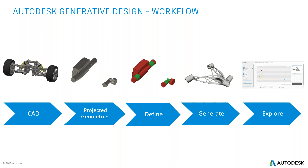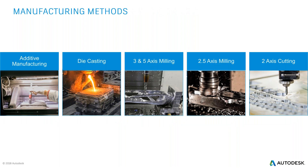Then you let the program generate all the different outcomes, and critically, you explore those outcomes — comparing cost, mass, and displacement as Mike showed in the explore graph. Regarding manufacturing methods, there are many available: unrestricted, additive, die casting, three-axis and five-axis, two-and-a-half axis, and two-axis. Many of these have only recently been added and are continually evolving, with the goal that each validated manufacturing method is properly accounted for in the output geometry.